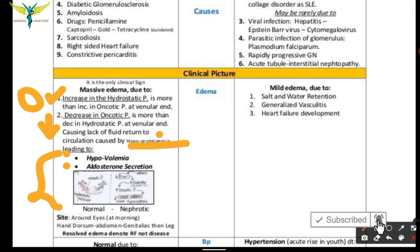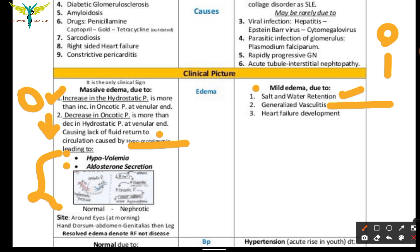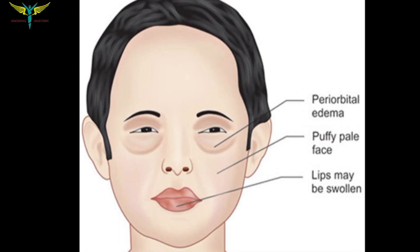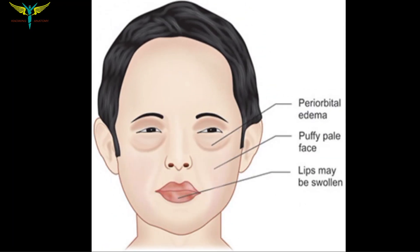In nephrotic syndrome, edema is seen around the eyes (periorbital edema), dorsum of the hand, abdomen, genitals, and lower limbs. In nephritic syndrome, there is mild edema caused by salt and water retention, generalized vasculitis, and development of heart failure. The massive edema in nephrotic syndrome is caused by increased hydrostatic pressure and decreased oncotic pressure.